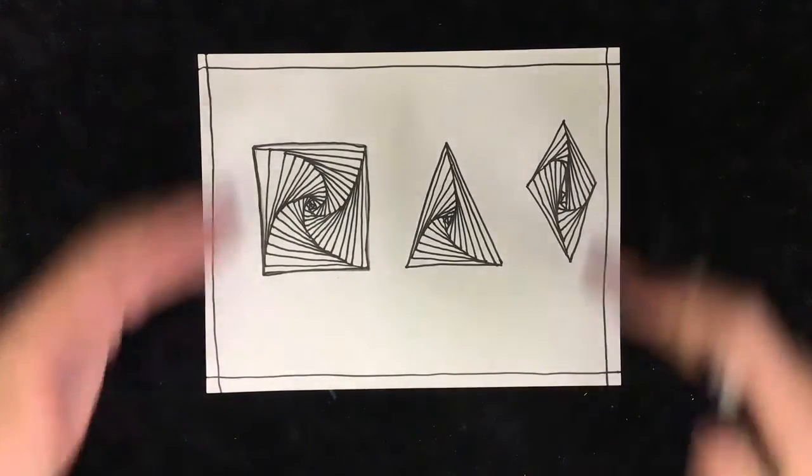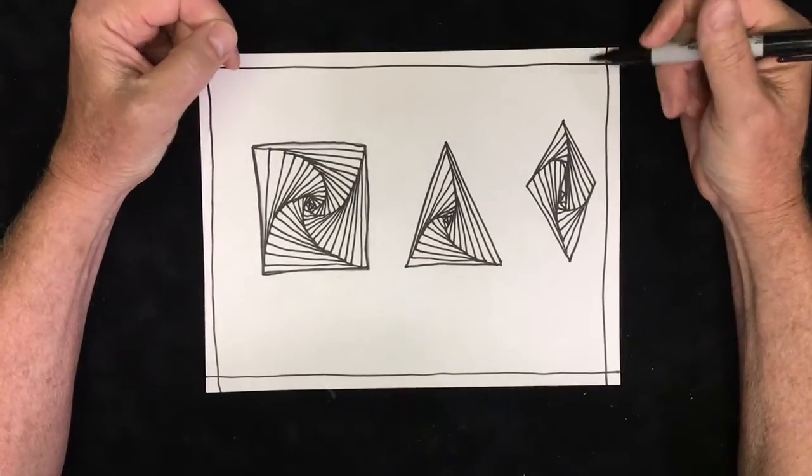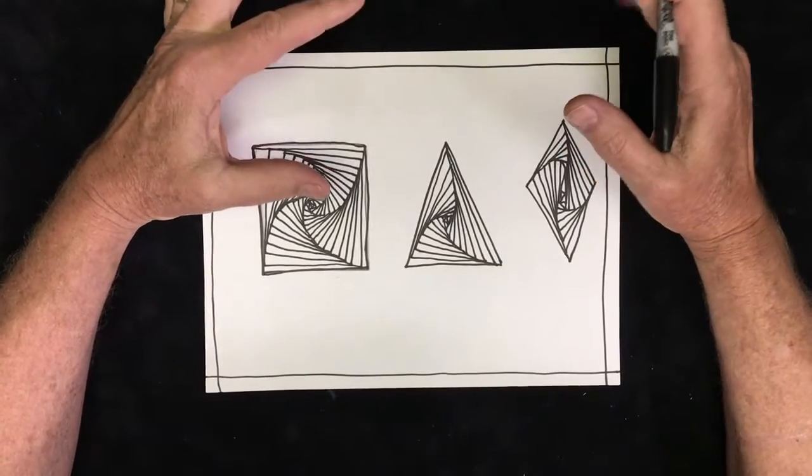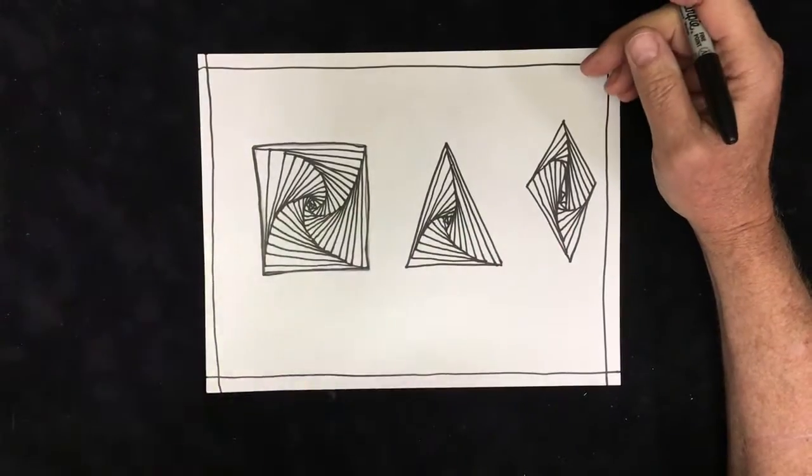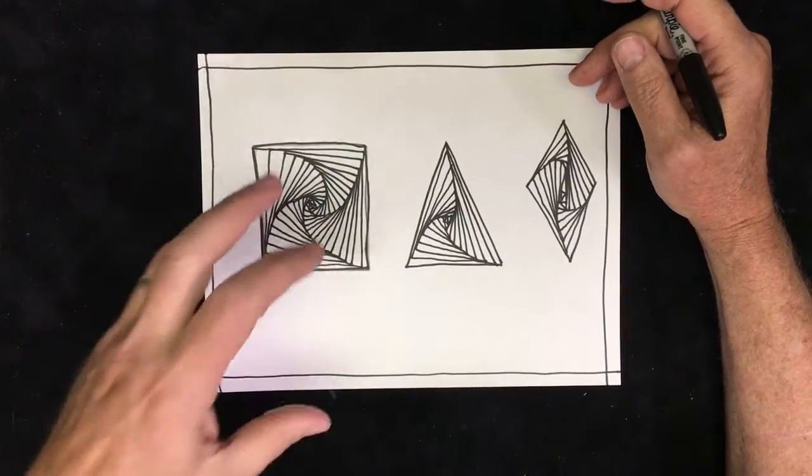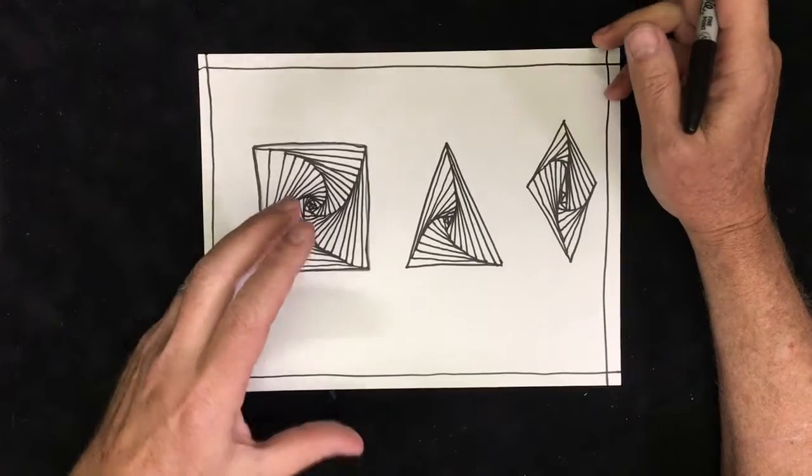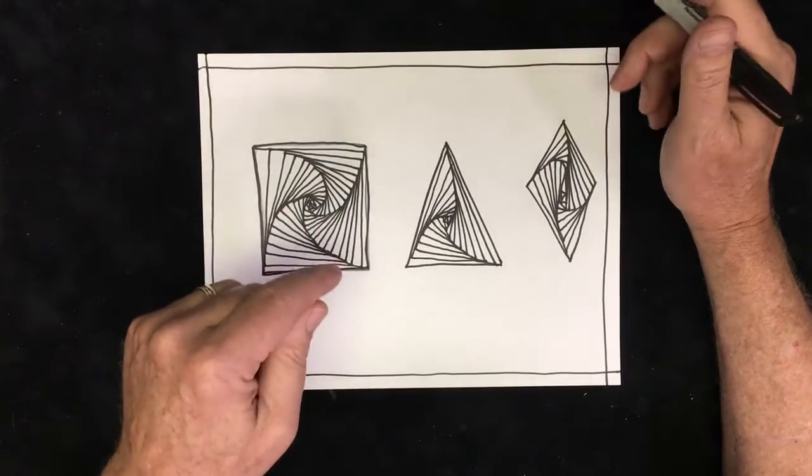All right, this is the cool part. Remember from my first video I said when you start doing this, a little bit of magic happens? Definitely the rotating of the shapes is magic, but the magic I was talking about, where something becomes greater than the sum of its parts, is what I'm about to show you right now.